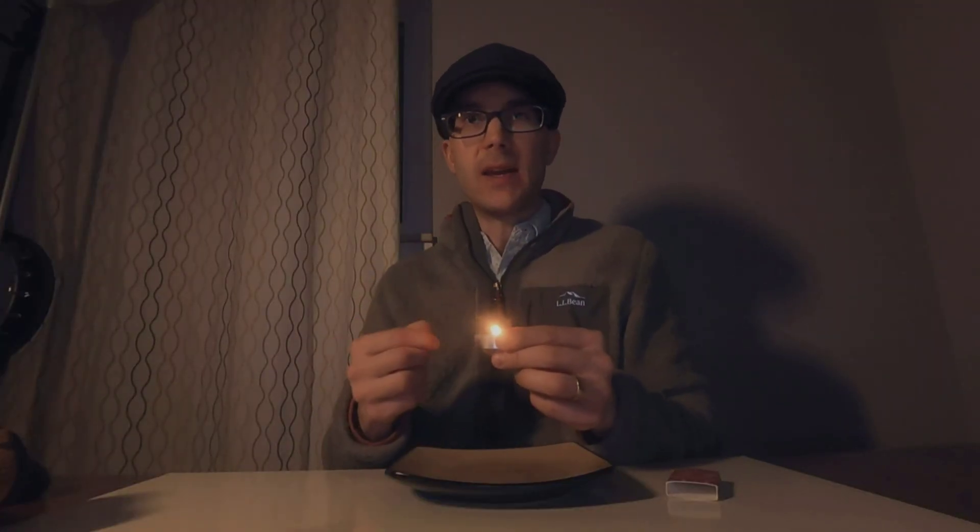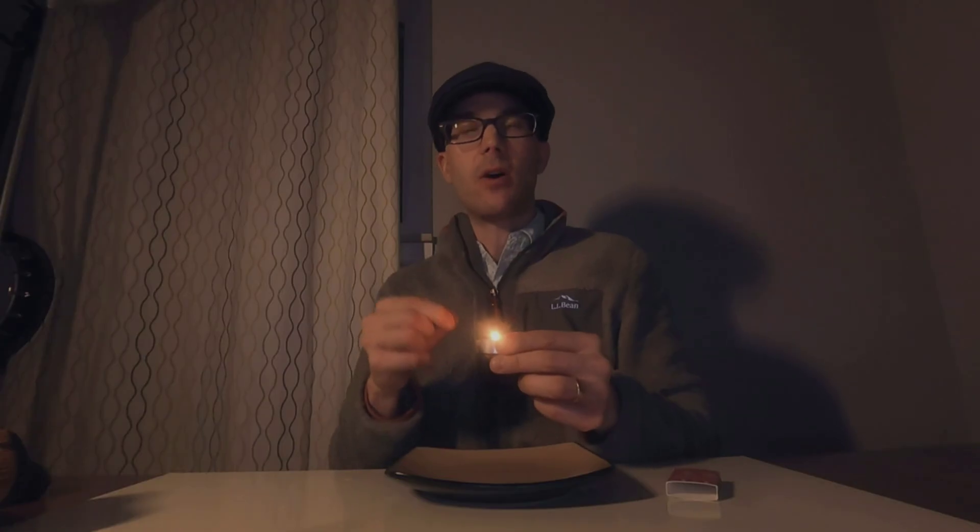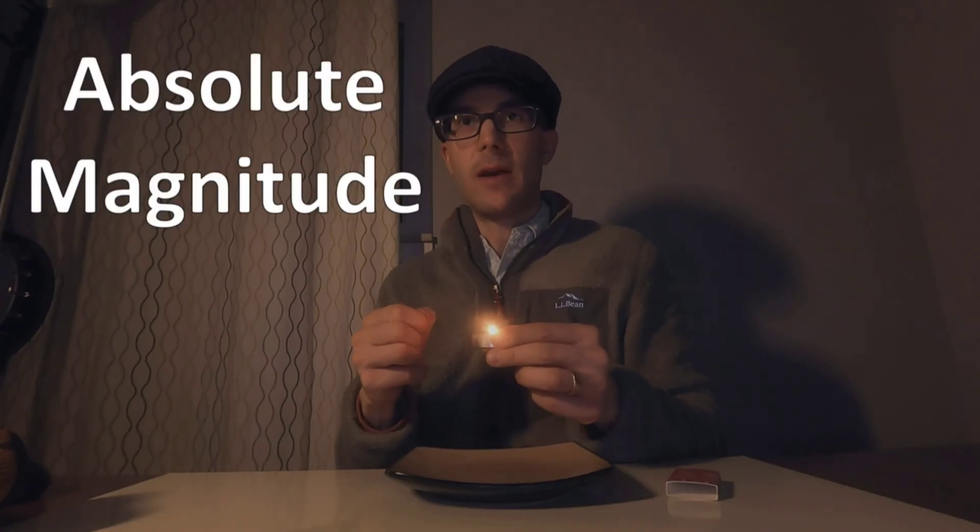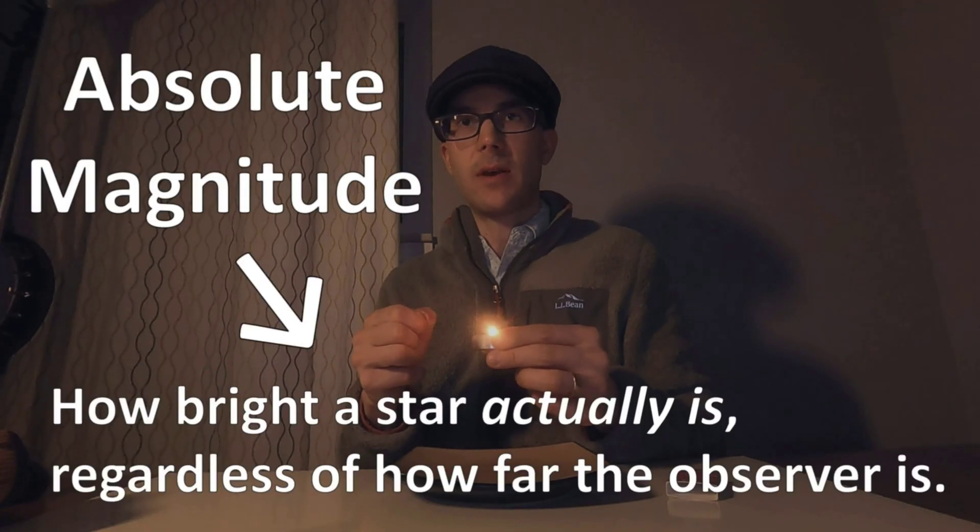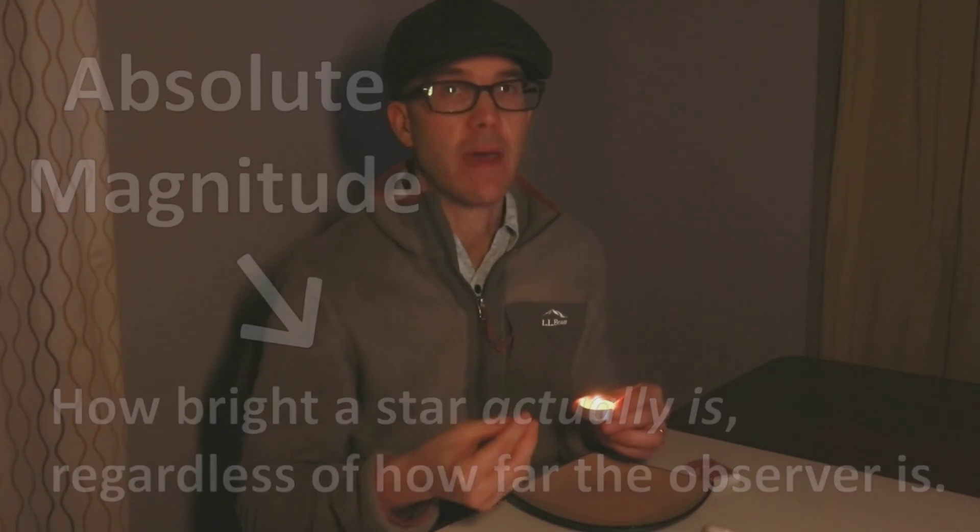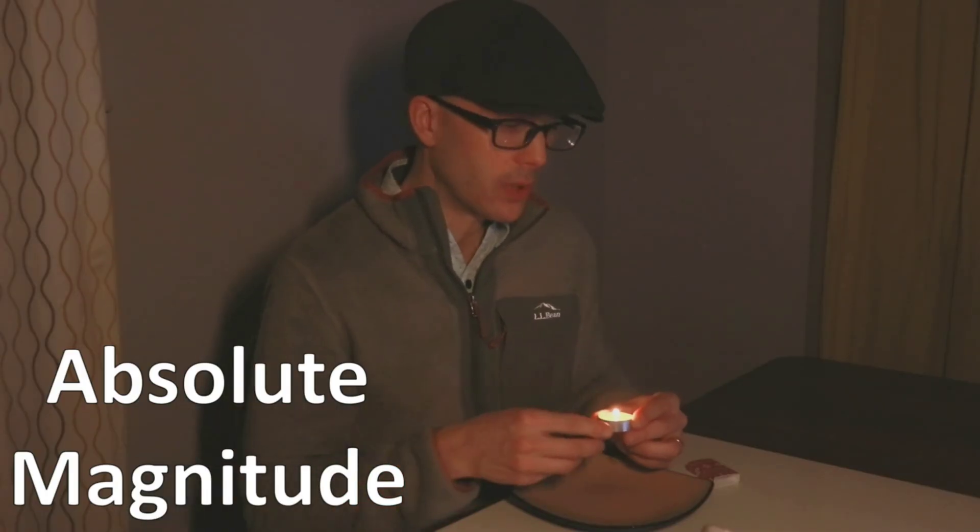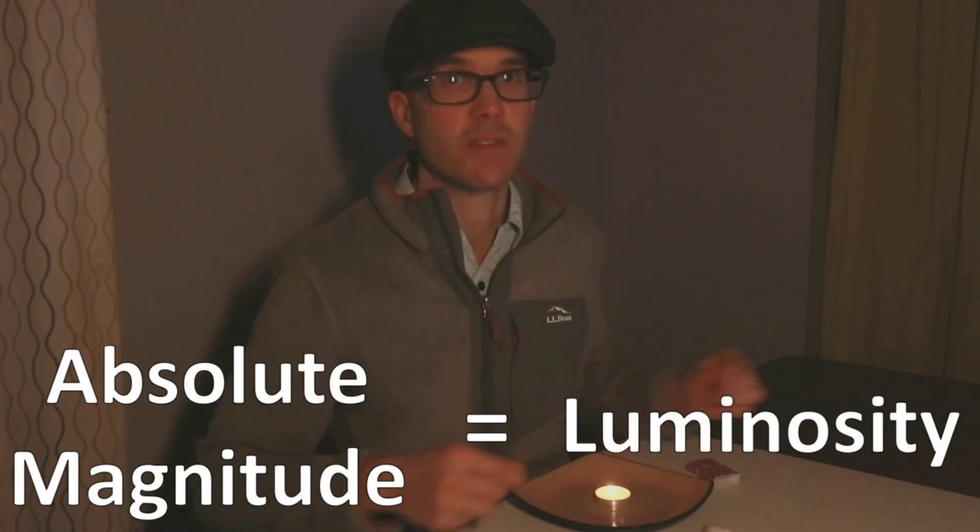That quality of brightness in this light source is called absolute magnitude. The absolute magnitude of a star doesn't depend on how close you are to it. It's an intrinsic property of the star itself. Each star has an absolute magnitude, its luminosity, the amount of light that it is actually pumping out. And that absolute magnitude is what we really mean by luminosity in this video.